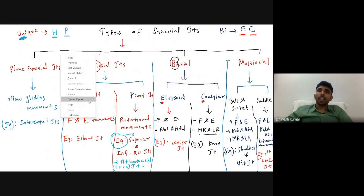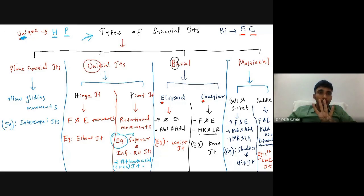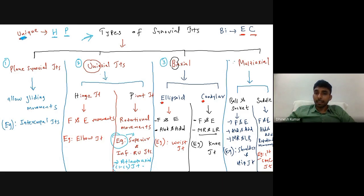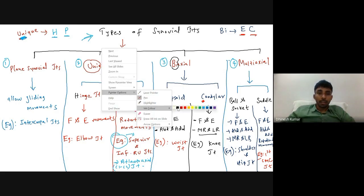The synovial joints can be classified into four types: plain synovial joints, uniaxial joints, biaxial joints, and multiaxial joints.